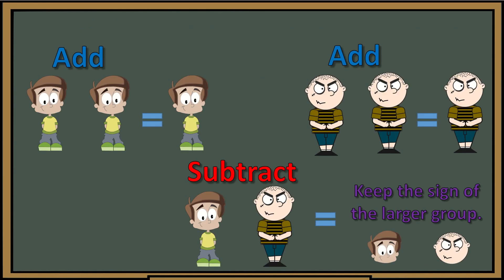I'm going to use good guys and bad guys. Whenever we have two good guys, they're friends and we end up with more good guys. If we have a bad guy with another bad guy, they're friends too and we end up with more bad guys. Positive and positive equals a positive; negative and negative, we end up with more negatives. If we have a positive and a negative — a good guy and a bad guy — they don't like each other, so they subtract, and we keep the sign of the larger group.